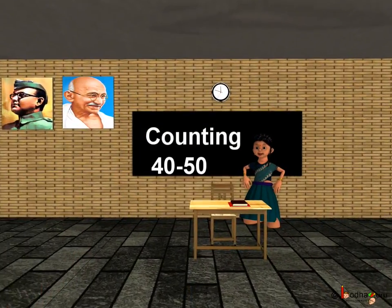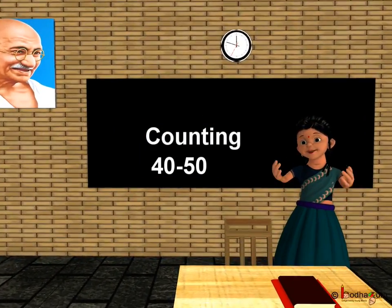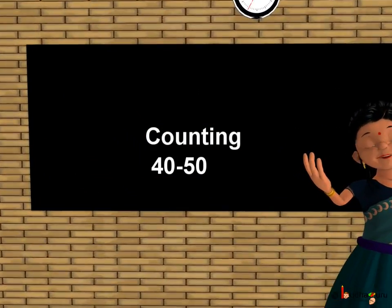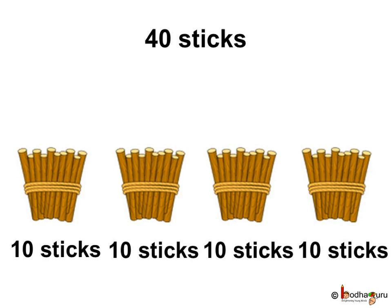Good morning children. Now you know counting from 1 to 40. Let us learn to count things more than 40. We already know 4 bundles of 10s means 4 tens or 40.